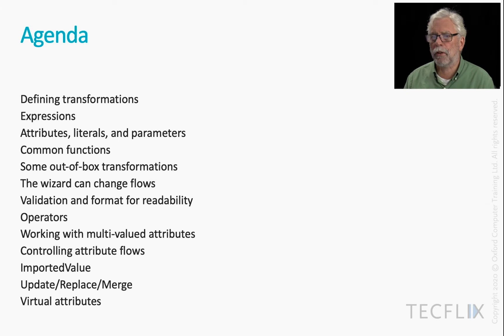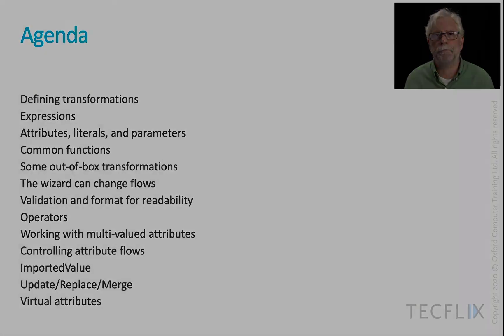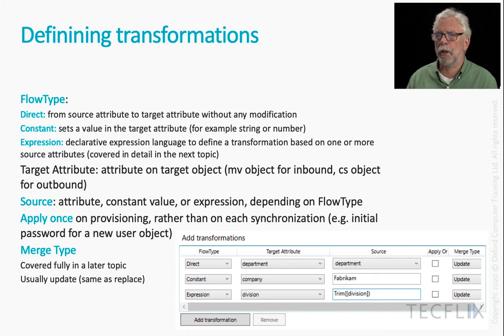I won't read through it, just to give you an idea of the topics that are coming up. We've already talked about transformations, and indeed we've even demoed changing some transformations. But let's just do a quick bit of revision before we dive into the rest of it. The flow type is going to be either direct, a constant, or an expression.